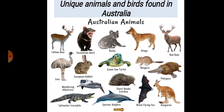Australia, lying in the southern hemisphere, has been gifted by nature with unique animals and birds not found anywhere else in the world. These include the fallow deer, Tasmanian devil, koala, dingo, red deer, emu, European rabbit, green sea turtle, mulgara, wandering albatross, short-beaked echidna, platypus, saltwater crocodile, spinner dolphin, black flying fox, and kangaroo. Kangaroo is also the national animal of Australia.